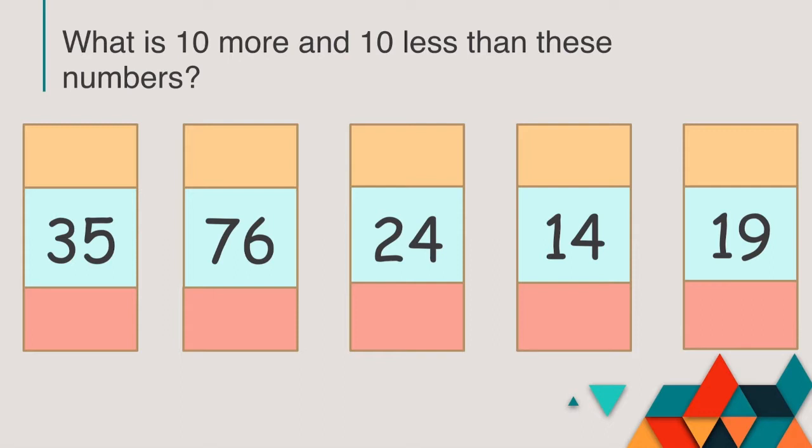In 35, we have 3 tens and 5 ones. Keep your ones digit the same and only change your tens digit. 10 more than 35, add 1 to the tens digit. So 3 plus 1 is 4.